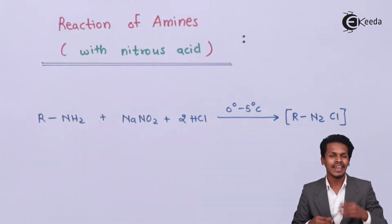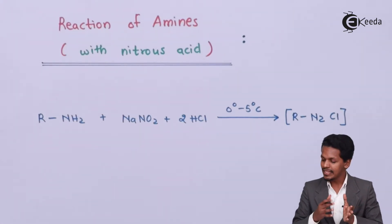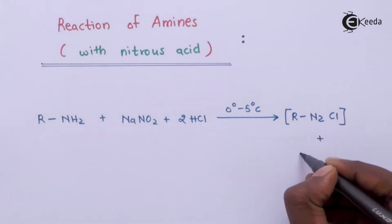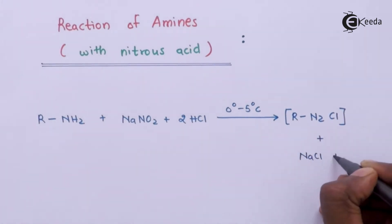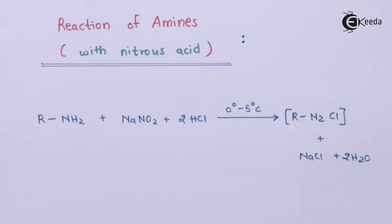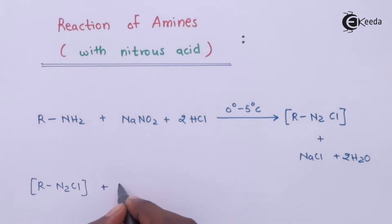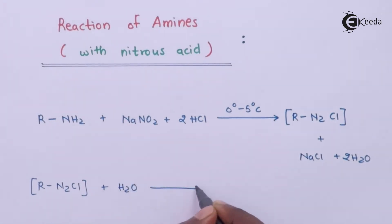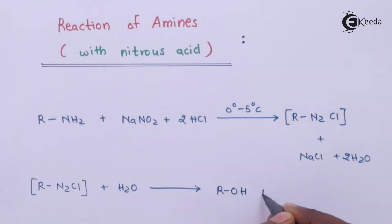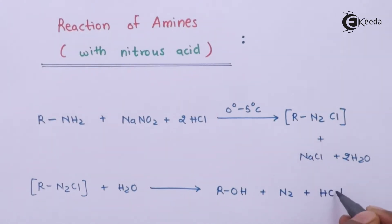The product is alkyl diazonium chloride (R-N2Cl), with NaCl and 2 moles of H2O as byproducts. If this alkyl diazonium chloride reacts with water, the reaction proceeds to give an alcohol (R-OH), along with N2 gas and HCl as byproducts.